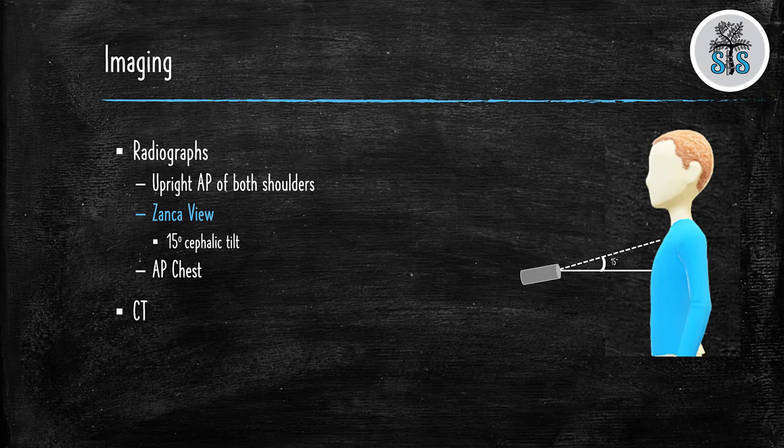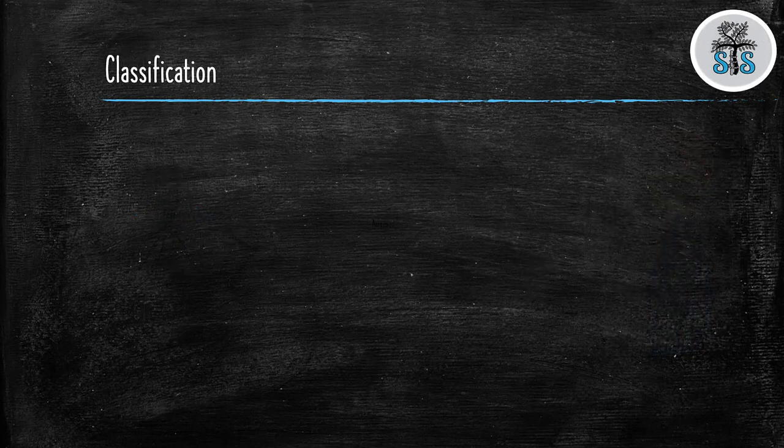Lastly is a CT scan. The majority of the time you will not order one of these, but they may help evaluate displacement, shortening, comminution, articular extension, vascular injury, or if it is a previous injury, the extent of nonunion. Alright, now onto the all-important classification system.